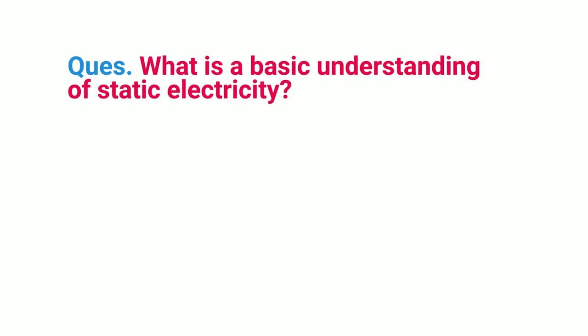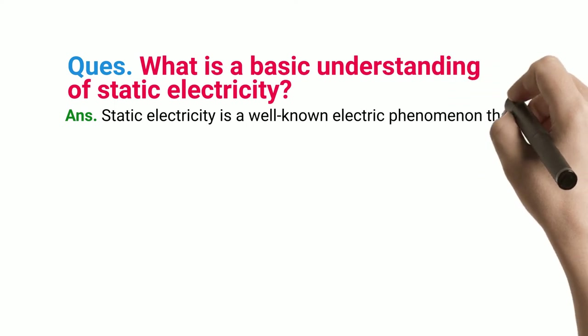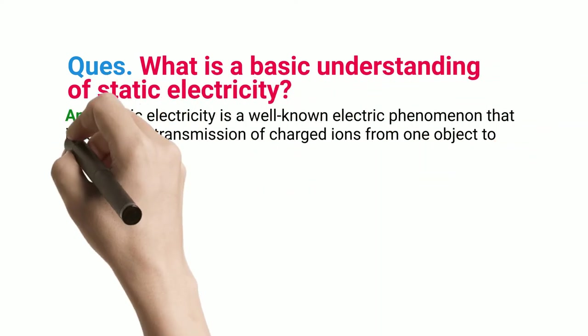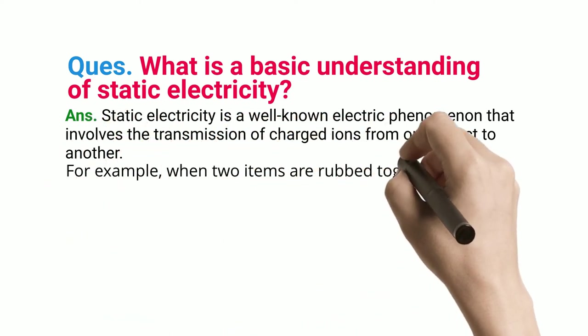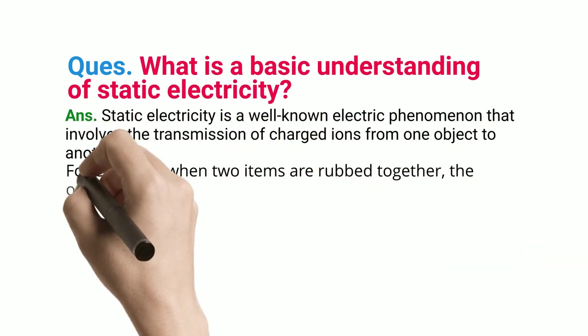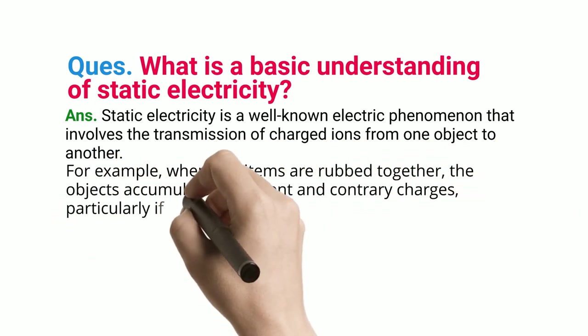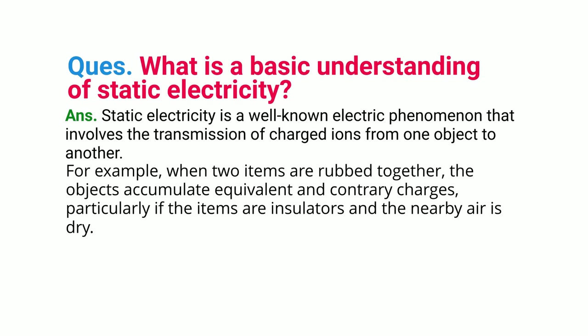Q: What is a basic understanding of static electricity? ANS: Static electricity is a well-known electric phenomenon that involves the transmission of charged ions from one object to another. For example, when two items are rubbed together, the objects accumulate equivalent and contrary charges, particularly if the items are insulators and the nearby air is dry.